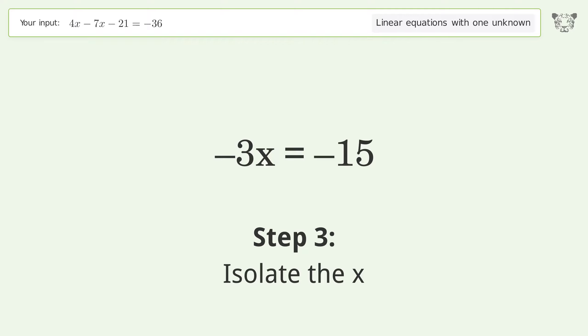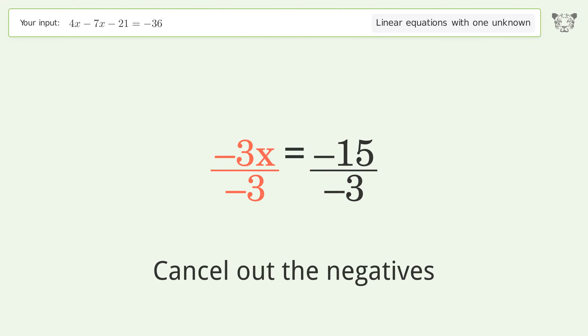Isolate the x. Divide both sides by negative 3. Cancel out the negatives. Simplify the fraction. Cancel out the negatives.